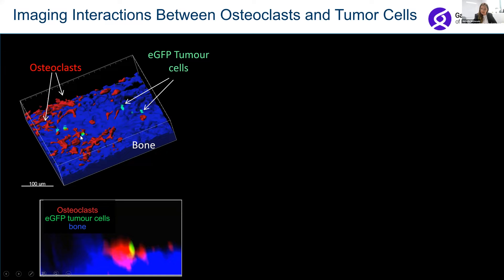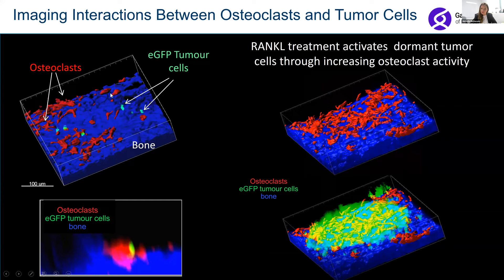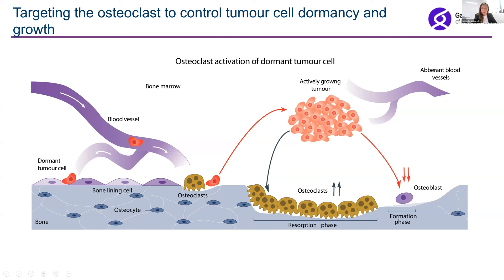In this zoomed-up image, you can see these green cancer cells sitting right next to osteoclasts. We've also been able to show that if we increase the number of osteoclasts using agents that drive their growth, we actually get a lot more tumor cells — a growing tumor mass causing a lot of destruction. So clearly there's something going on where having more osteoclasts promotes more tumor growth.